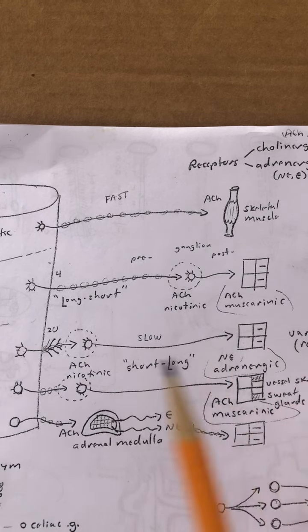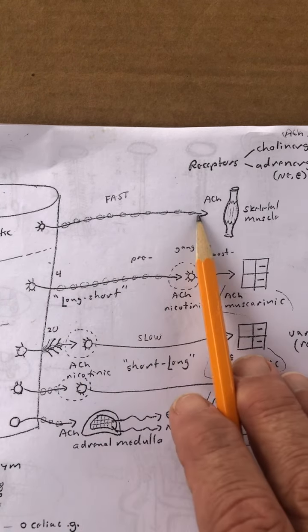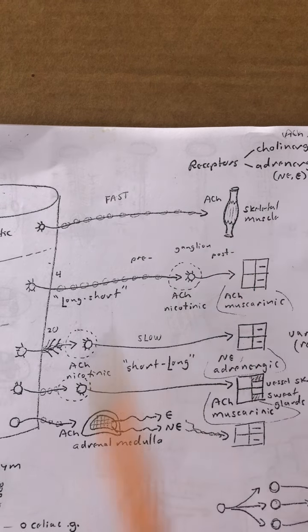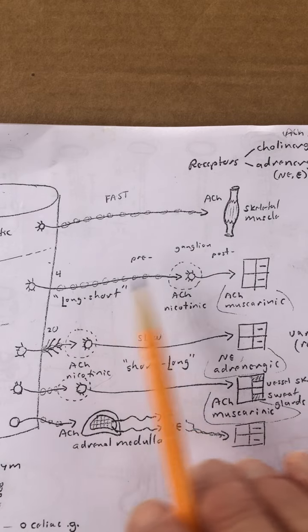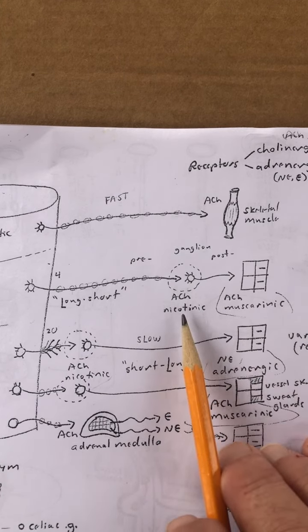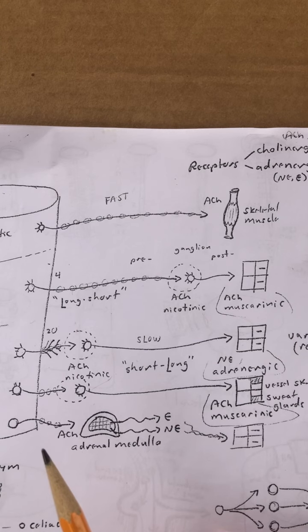So somatic, one neuron, one synapse, one neurotransmitter, one kind of target, one kind of muscle as the target. For a parasympathetic, two neurons, two synapses, one neurotransmitter, but two different types of receptors.